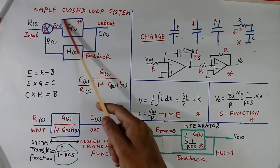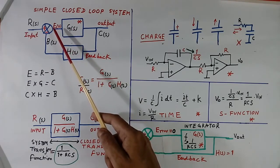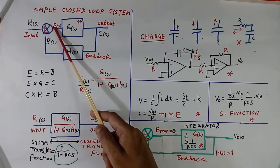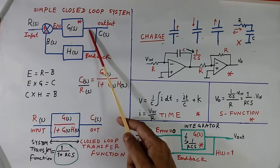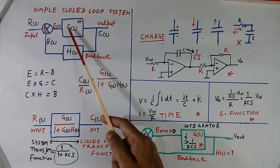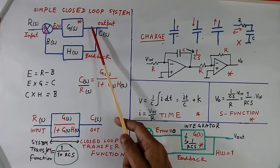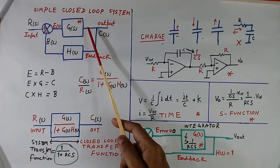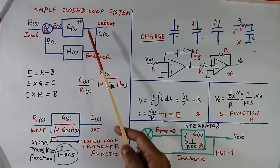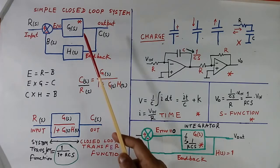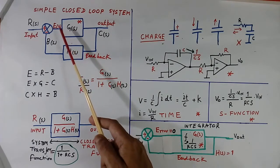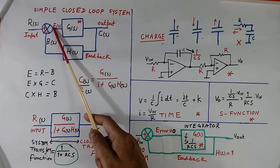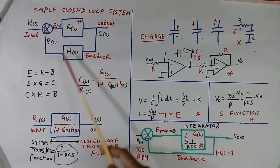The advantage of S-function is: when we multiply E with G, you get this output. Just multiplication will do, which is not possible in time functions — in time it is difficult to calculate. So for calculation we use S-function. So when we multiply E with G, we get this.